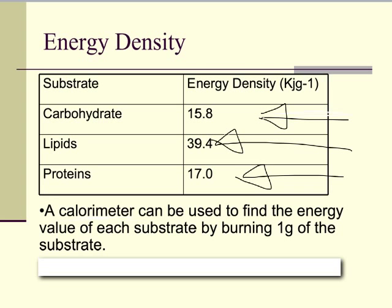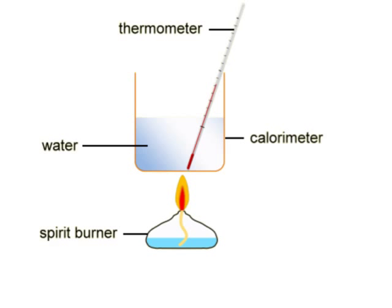Looking at the calorimeter diagram: you have your food source set on fire beneath a beaker filled with a set volume of water, with a thermometer. You measure the temperature of the water before and after igniting the food — the difference shows the energy liberated. The greater the energy density of the food, the greater the temperature change.